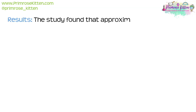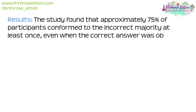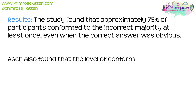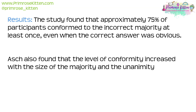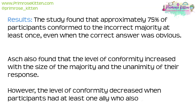The results of Asch's study: The study found that approximately 75% of participants conformed to the incorrect majority at least once, even when the correct answer was obvious. Asch also found that the level of conformity increased with the size of the majority and the unanimity of their response. However, the level of conformity decreased when participants had at least one ally who also gave the correct answer.